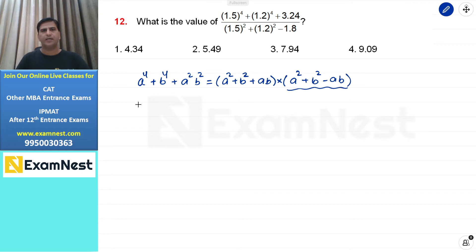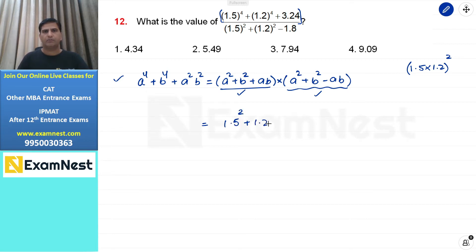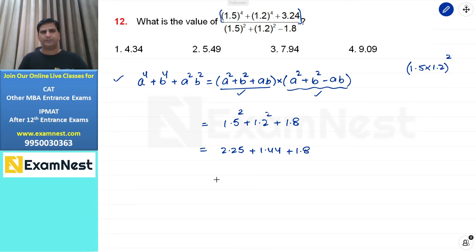अगर हम इस term को यहाँ denominator पर ले आएं, तो हमारे पास यह value बचेगी। इस question में a की value 1.5 लें, b की value 1.2 लें, और यह 3.24 is nothing but 1.5 into 1.2 का square, क्योंकि 1.5 into 1.2 होता है 1.8 और 1.8 का square 3.24। तो numerator और denominator simplify होने पर बचेगा: 1.5 square plus 1.2 square plus 1.5 into 1.2, that is 1.8। यह हो गया है 2.25 plus 1.44 plus 1.8, हमारा answer आएगा 5.49, second option।